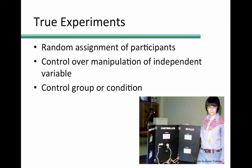A true experiment offers the most control over variables and therefore the best approach to exploring causal relationships between independent and dependent variables. There are three main characteristics that all true experiments must have. First, they must involve random assignment of participants to groups or conditions. In the case of a within-participant design, participants must experience the conditions in a random or counterbalanced order.